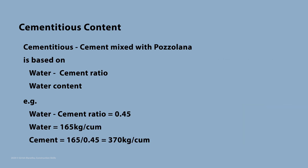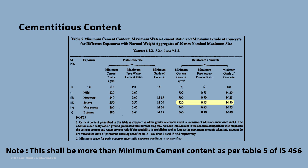Once we have estimated water content, we can estimate cement or cementitious content. Cementitious is the word used for cement mixed with some pozzolana, which we will see in our later video. For example, if water cement ratio is 0.45, and water content is 165 kg per cubic meter, then cement content is 165 divided by 0.45, which equals 370 kg per cubic meter. Make sure this is more than the minimum cement content for design strength as per IS 456 Table 5.